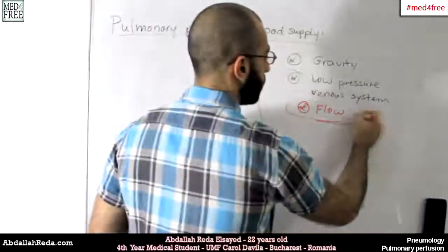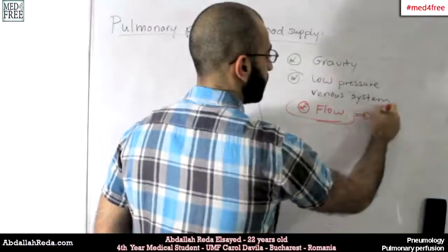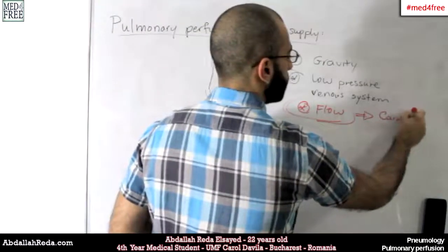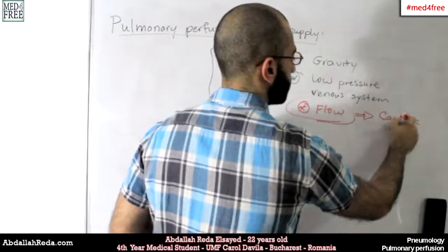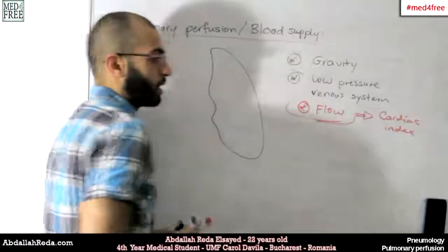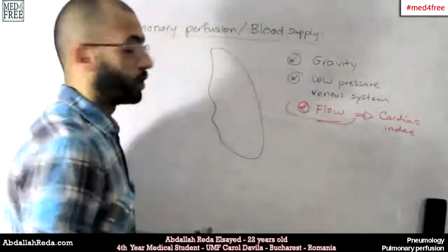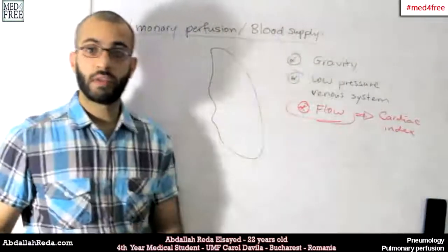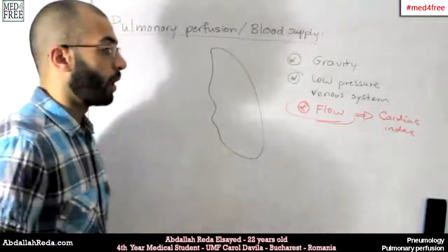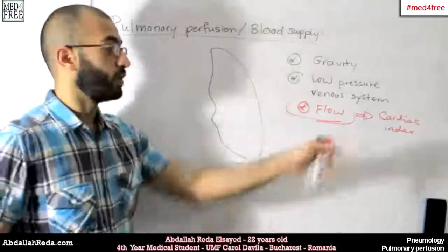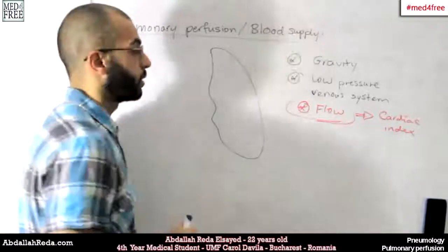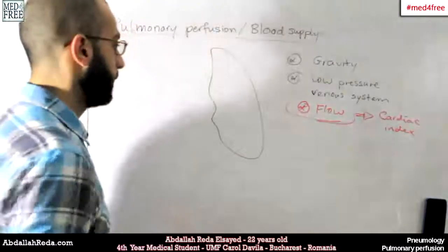Lung perfusion is also a very good index for cardiac function — it's a cardiac index. If we have good perfusion of the lungs, that means the flow coming from the heart is fine, which means the cardiac function is okay.